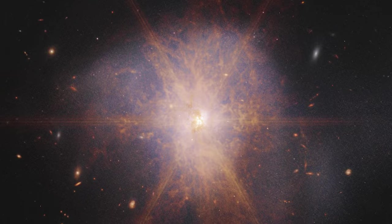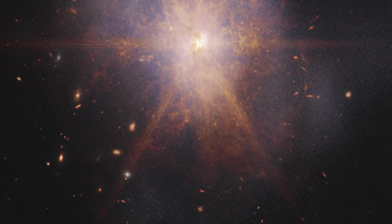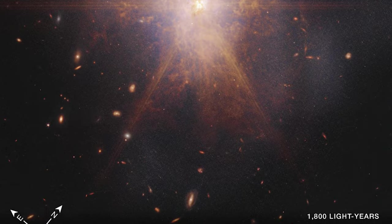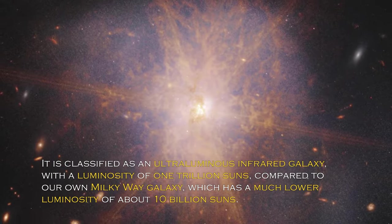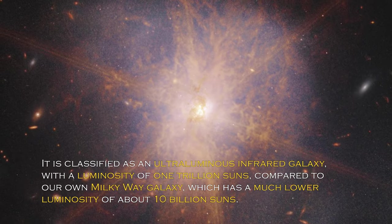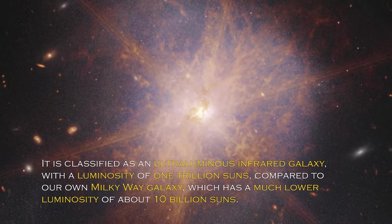When two spiral galaxies merge, the phenomenon known as ARP 220 shines brightest in the infrared, making it perfect for observation by the James Webb Space Telescope. It is classified as an ultra-luminous infrared galaxy, with a luminosity of one trillion suns.